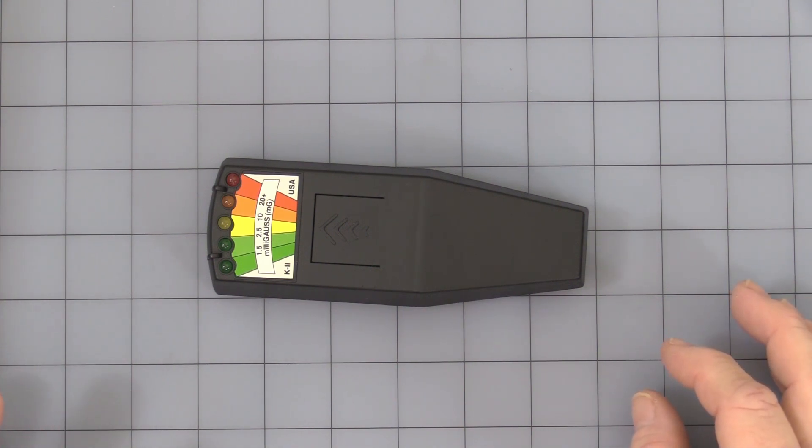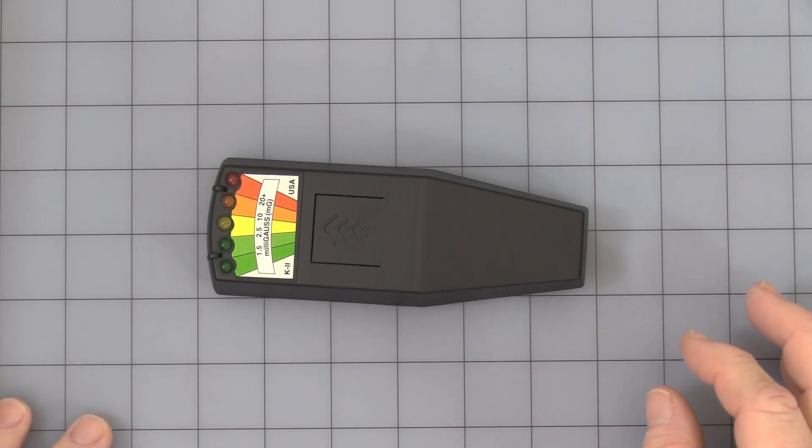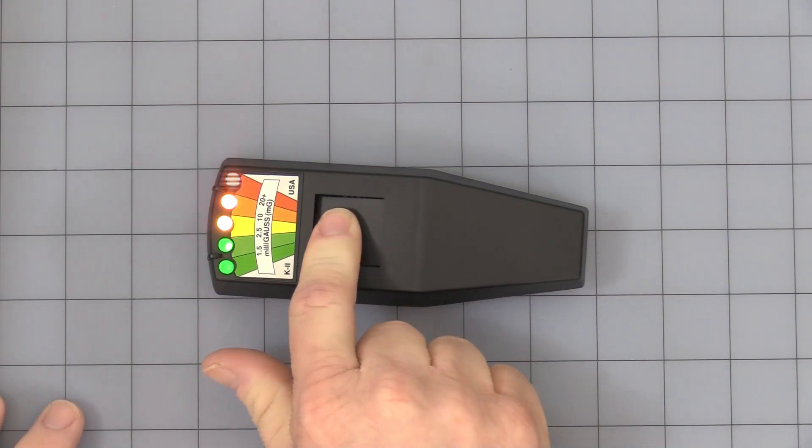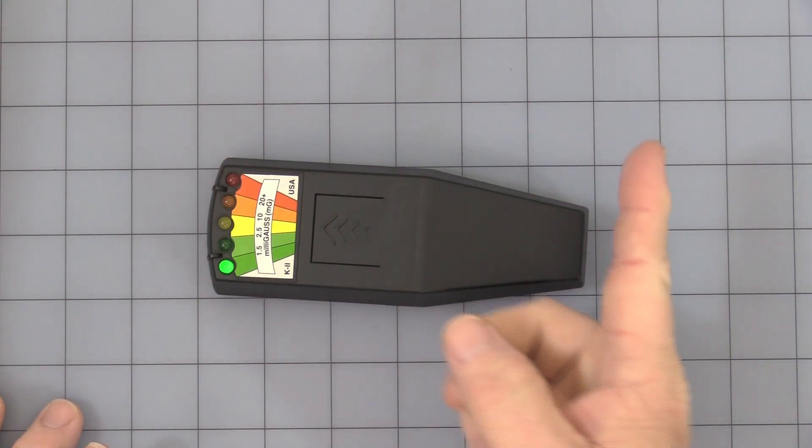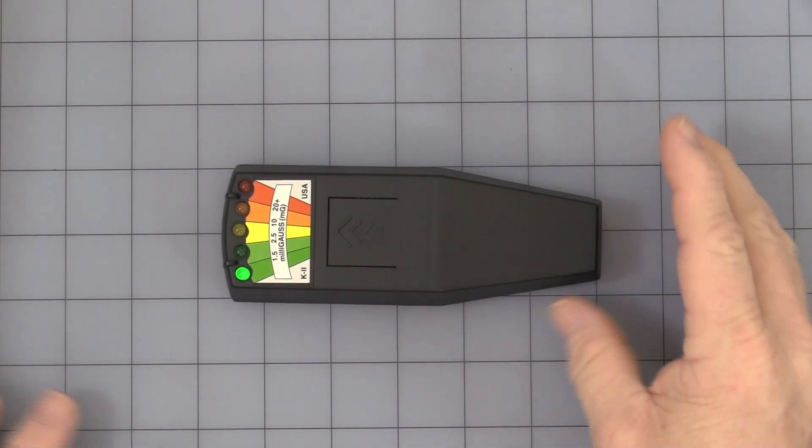This is just to get an idea of what distance you need to stay away from to get outside the EMF field of these devices. So let's go ahead and turn it on. We've pressed the button once. It shows all the LEDs working. All right, now nothing's turned on so it's just in the simple green.